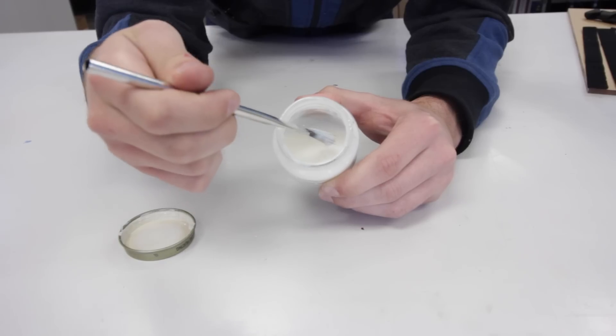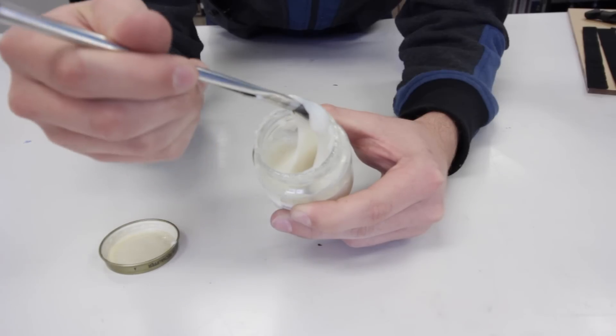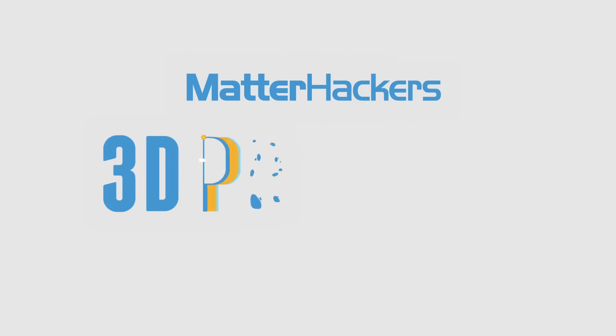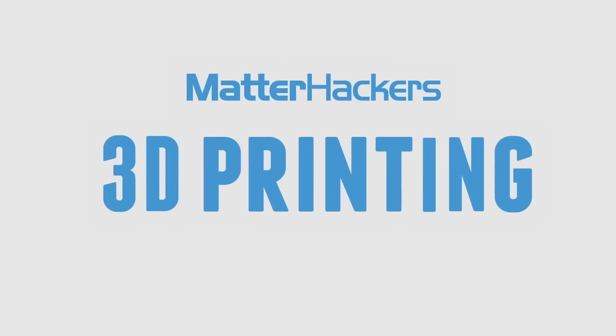Hey, I'm Alec, and this is how you make ABS juice, glue, and slurry. Before you start, here are the materials you'll need.